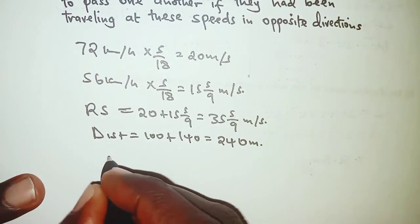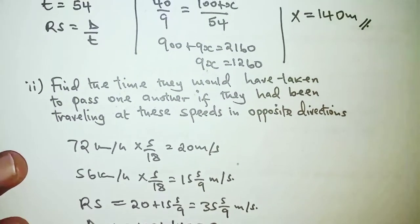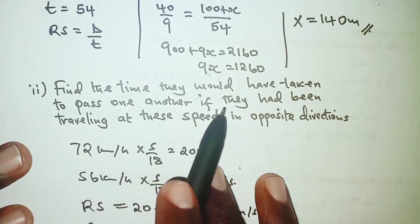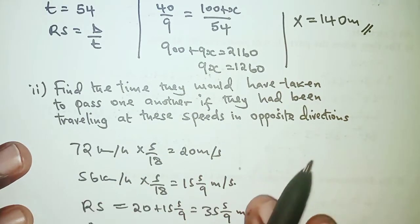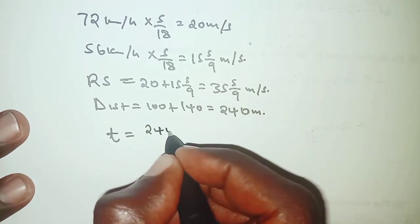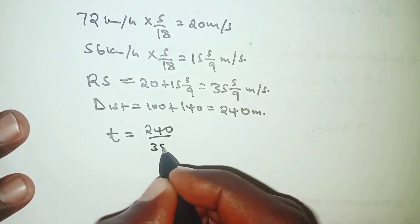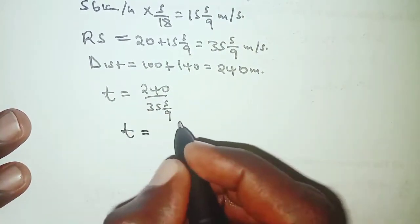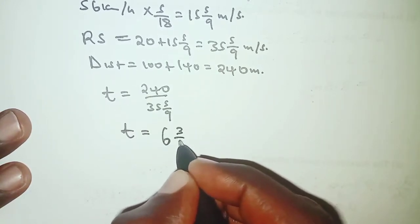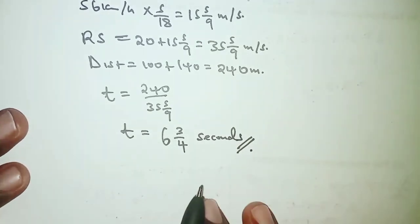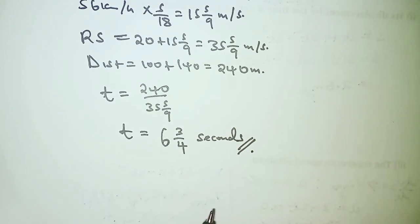We can now find the time. The time is distance over speed: 240 divided by 35 and 5 over 9. From the calculator, the time is 6 and 3 over 4 seconds. That is it for this question — thank you for watching, hope to see you in the next video.